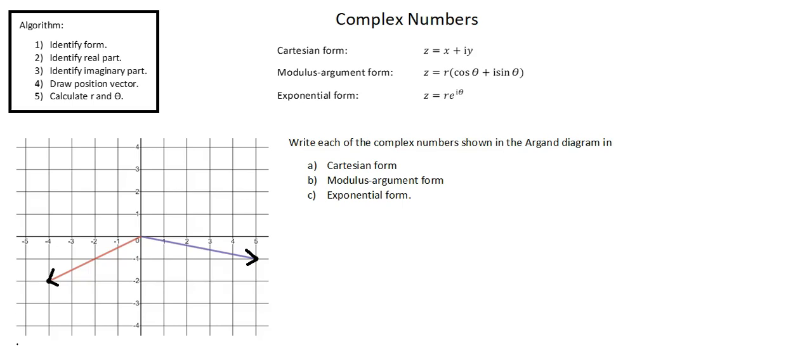And in the argand diagram, our horizontal axis represents the real part of the complex number, which we will label as real z. And the vertical axis represents the imaginary part of the complex number, which we will label imaginary z.